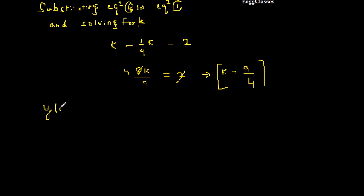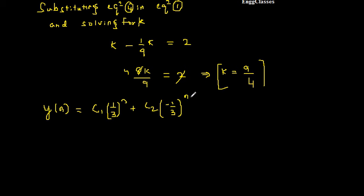Now I write the total response. y[n] = C1·(1/3)^n + C2·(-1/3)^n + 9/4. This is the natural response plus the particular (forced) response, and I call this equation 5. The only unknowns are C1 and C2.